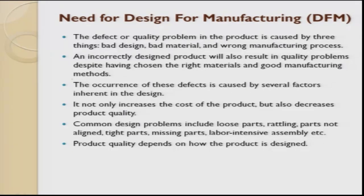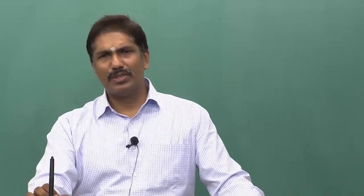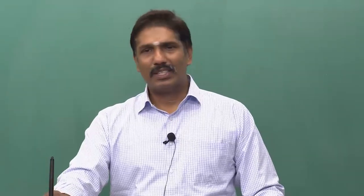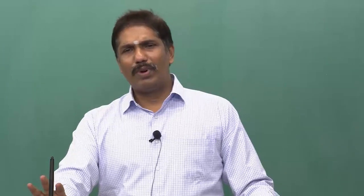Machining is commonly used for small batch sizes, while extrusion is preferred for mass production. In mass production, the die cost is high, so they look for mass production to offset it, which also brings down component price drastically. In extrusion, the load is uniformly distributed, so grain size and defects are minimized, giving high-quality output in terms of strength. With machining, compressive stresses are induced on the surface, but you cannot be sure about the core quality. Choosing the wrong manufacturing process leads to defects or quality problems.